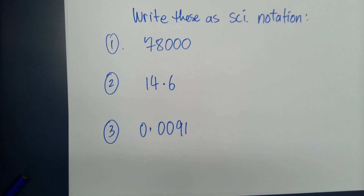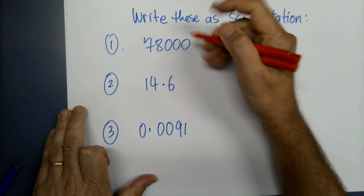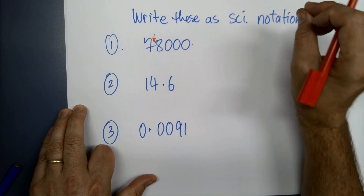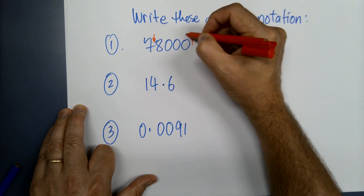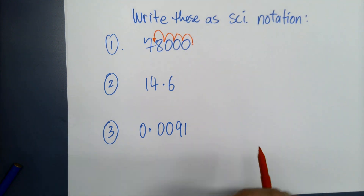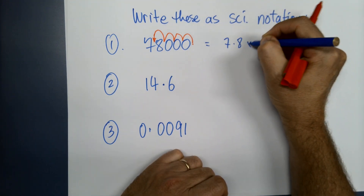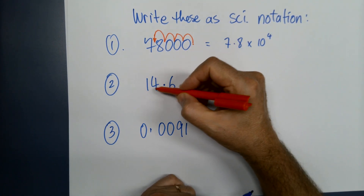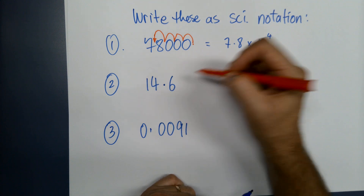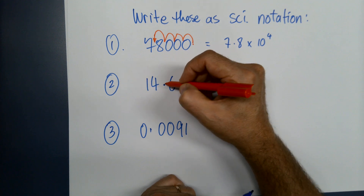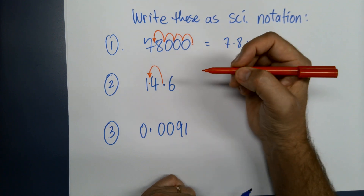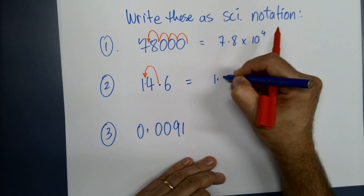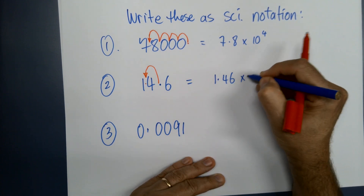Assuming you've paused, let's do this now. For 78,000: decimal point starts at the end but it's got to end up after the 7 — this is a big number so the power is positive. One, two, three, four — so that's 7.8 times ten to the power of four. For 14.6: it's more than one so it'll be a positive power. The decimal only moves one place to get after the 1, so that's 1.46 times ten to the one.